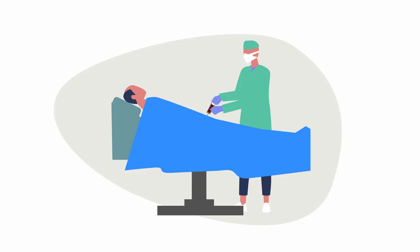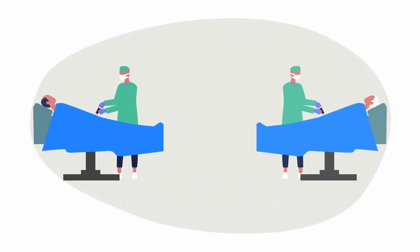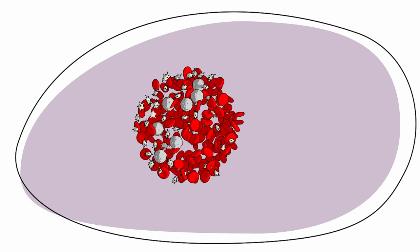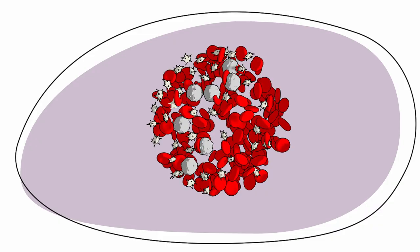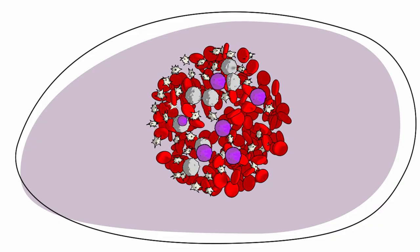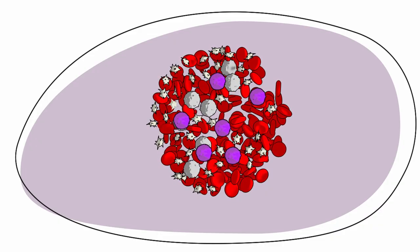Sometimes doctors may use stem cells from a donor to help treat mantle cell lymphoma. This is called an allogenic stem cell transplant. It may help people stay in remission longer, but it comes with higher risks. That's why it's usually used only if the cancer comes back after treatment.